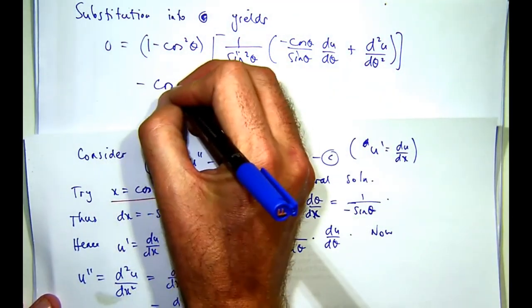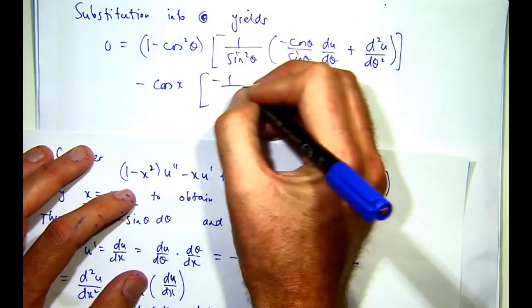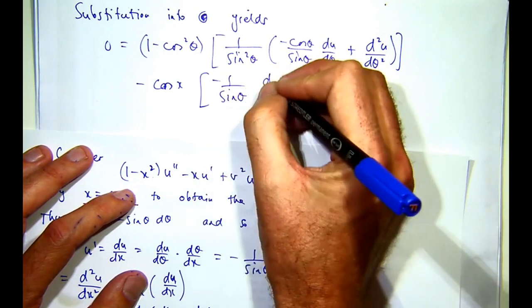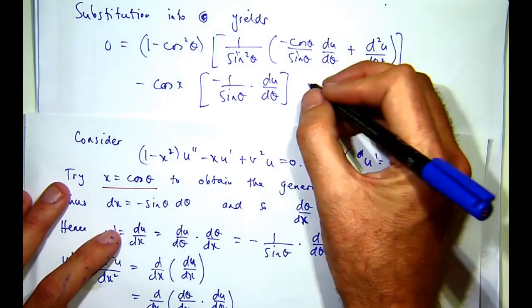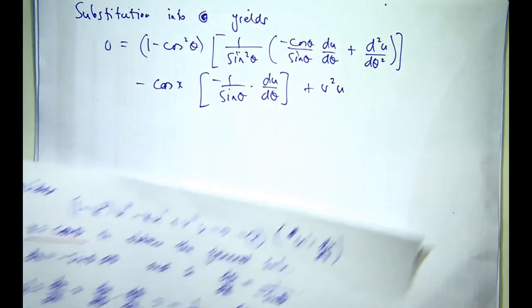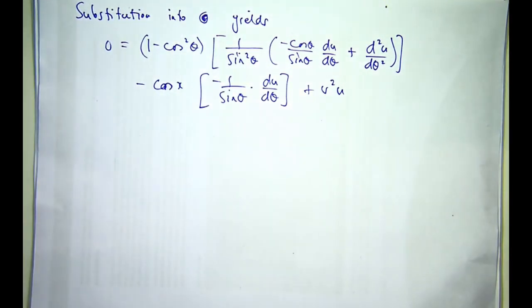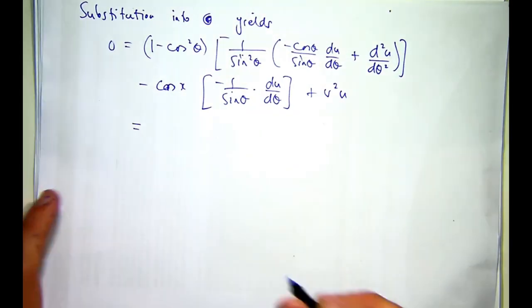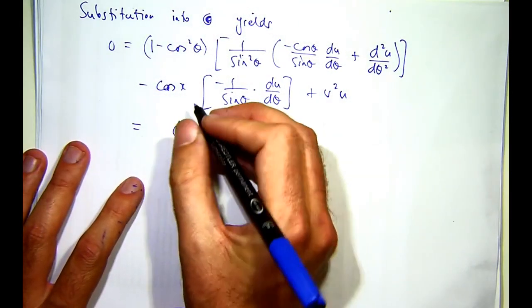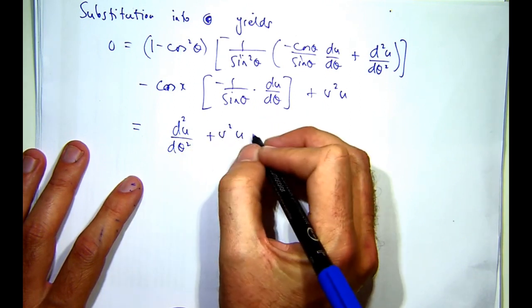The second term is going to be u prime, which is there. And the last term is just v squared u. Okay. So now you can see that, all right, that can be sine squared. We're going to get some cancellation out of there. And you'll see that this term is going to cancel off with this term. So now the magic happens. And you get the following.